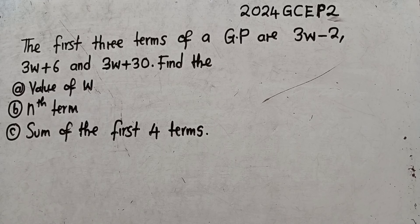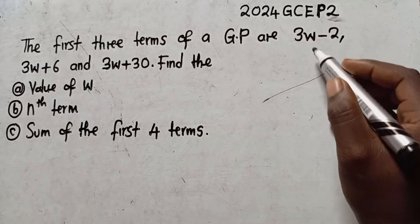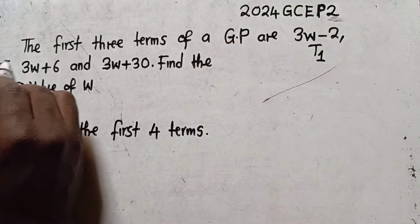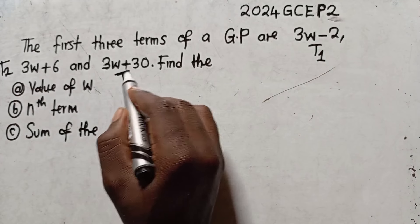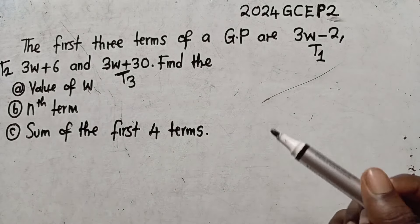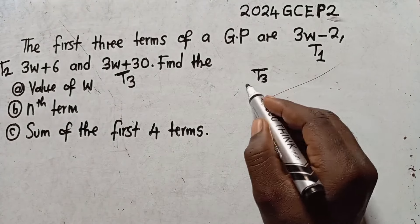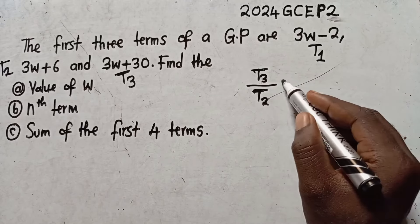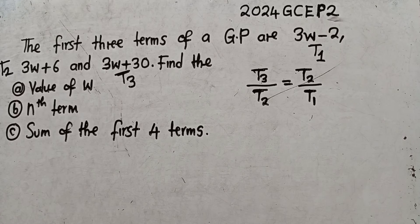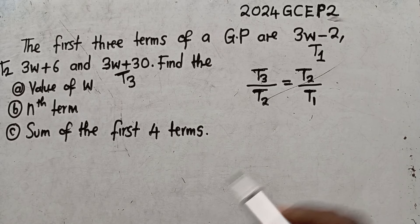When you are asked to find the value of an unknown — whether it's w, p, or m — what you need to do is identify term one, term two, and term three. To find the value of w, we use the formula: T3 divided by T2 equals T2 divided by T1. This is the formula to use for every such question in an exam.